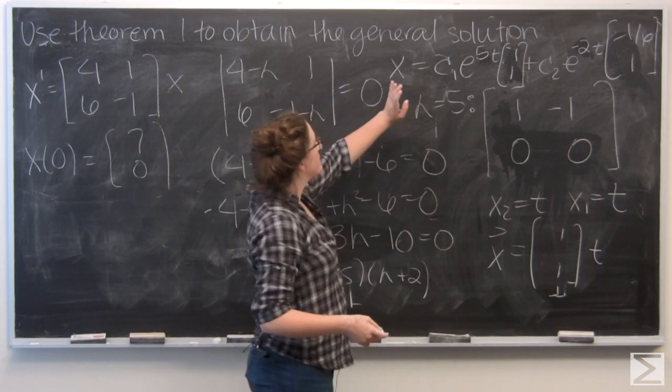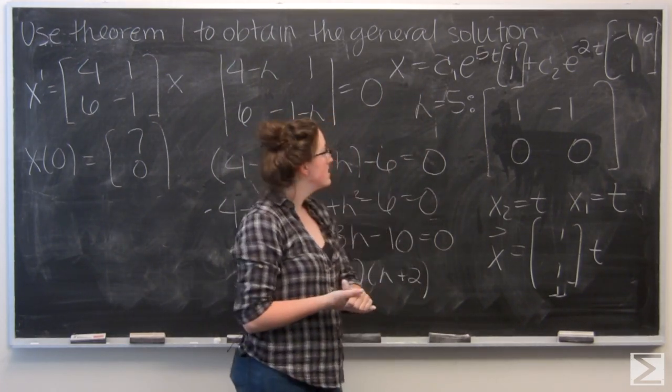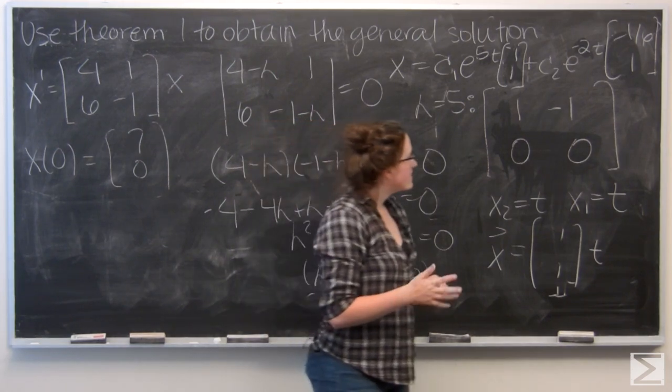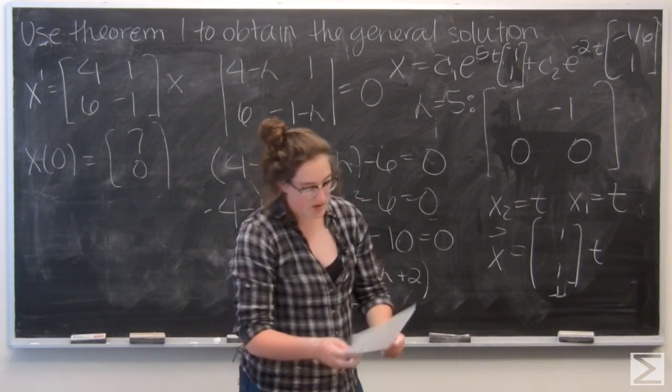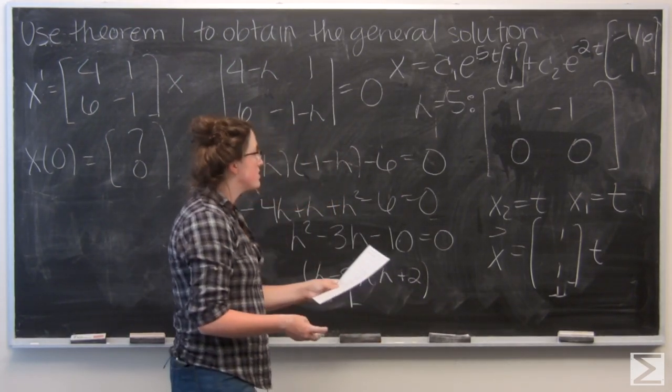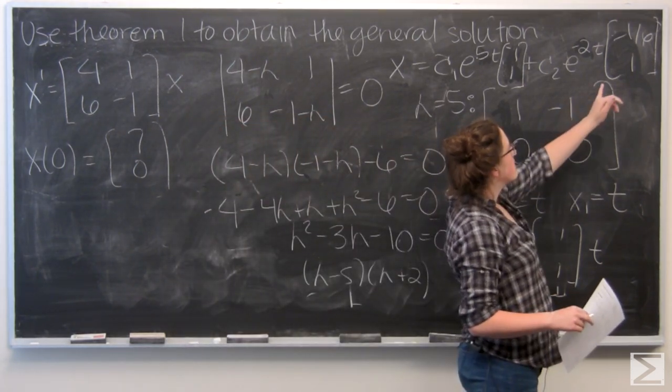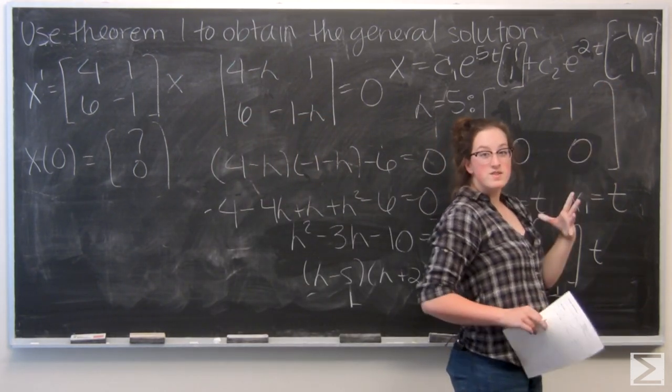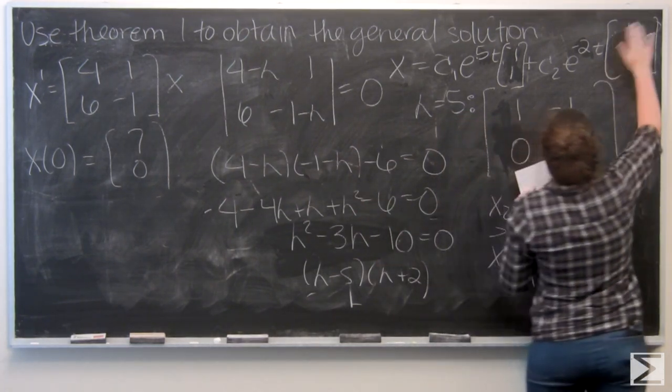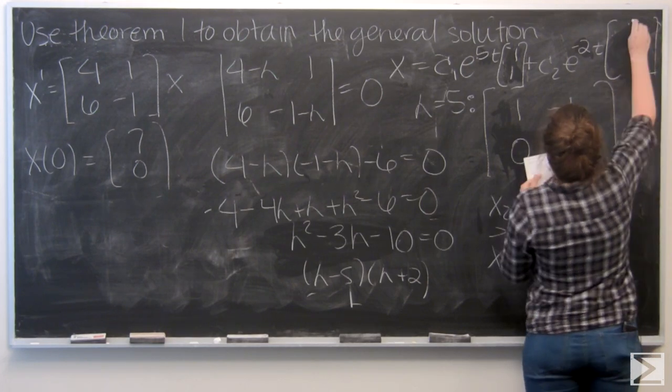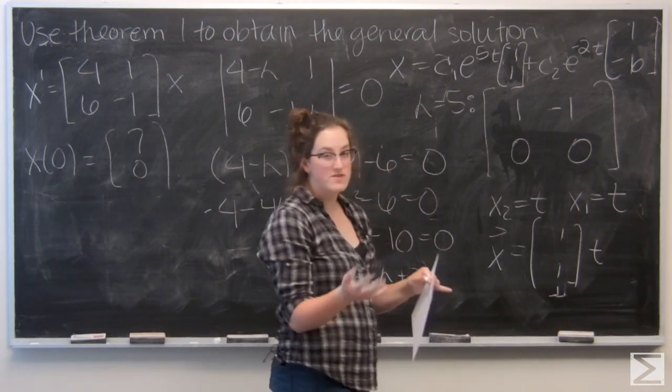And so my general solution is c1 e to the 5t times 1, 1 plus c2 e to the negative 2t times negative 1 over 6, 1. So now I just want to use the initial condition that I was given. But first let's rewrite the second vector. If I multiply both components by negative 6, I'll still have the same vector. But it will be a little bit easier to work with as we go into using that initial condition. So that becomes 1 negative 6. Just a little bit easier to work with.